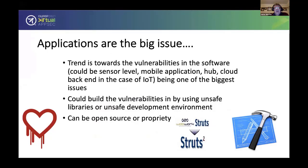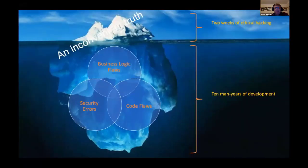We tend to build vulnerabilities into unsafe libraries and unsafe development environments because security isn't considered early enough in the development process. The problem can be open source or proprietary, and there continue to be issues over the years. We know that if we start doing pen tests at the end of our development — doing two weeks of pen tests a year on our application — there's still 10 man-months of stuff under the surface: code flaws, security errors, and business logic flaws hidden below what's visible.